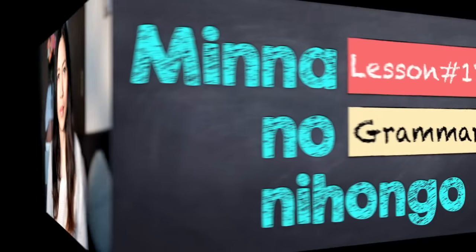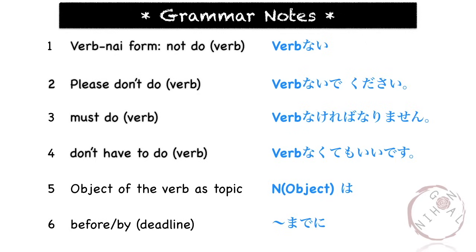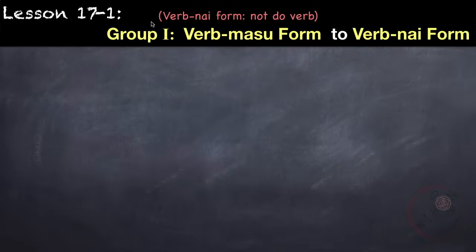Minasan konnichiwa, welcome back! In this lesson we will learn new Japanese grammar from the Minna no Nihongo textbook, lesson 17. We will learn about the nai form of the verb and its uses. The first grammar point is the verb nai form, meaning 'not do verb' — this is the plain or informal form of verb masen, which we learned in lesson four.